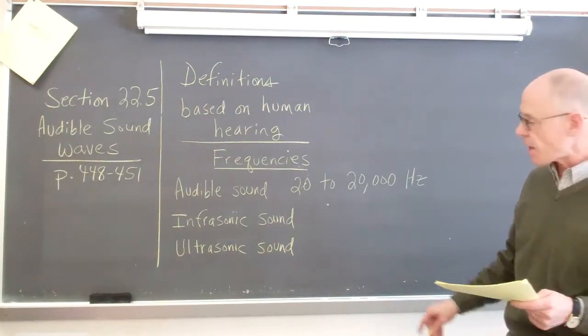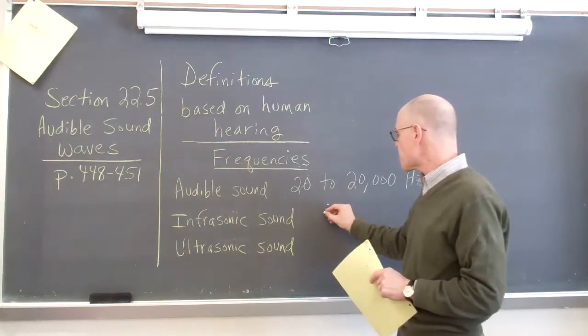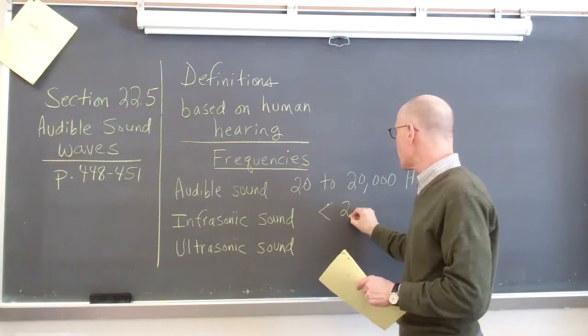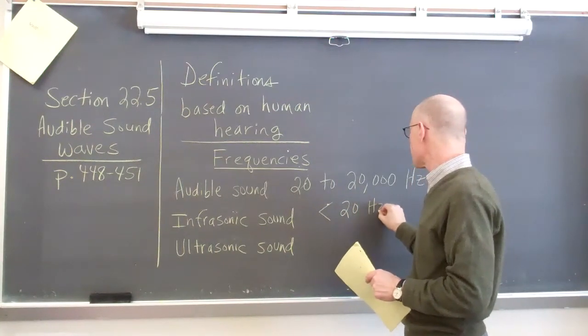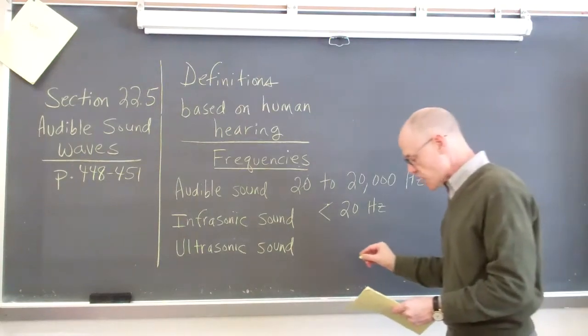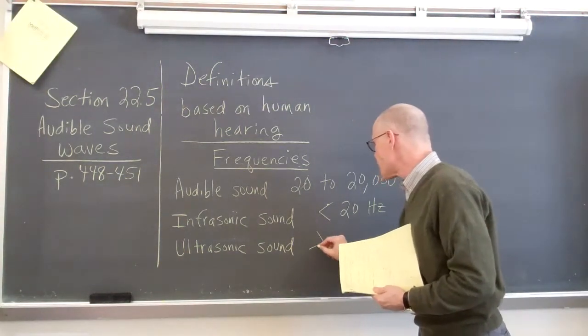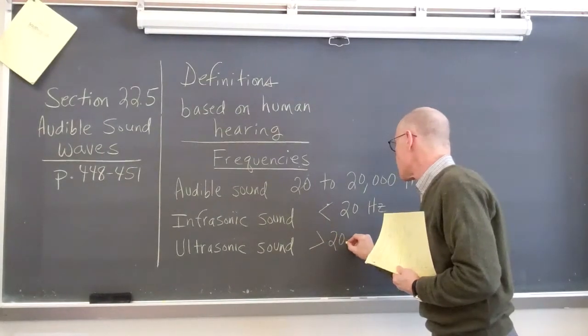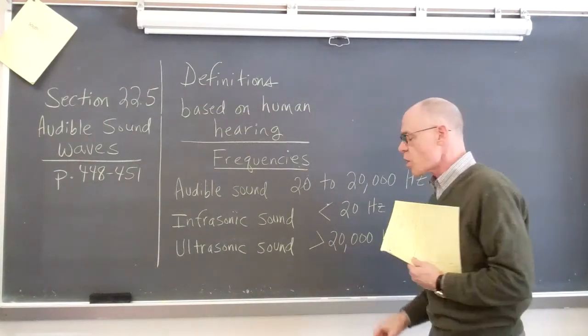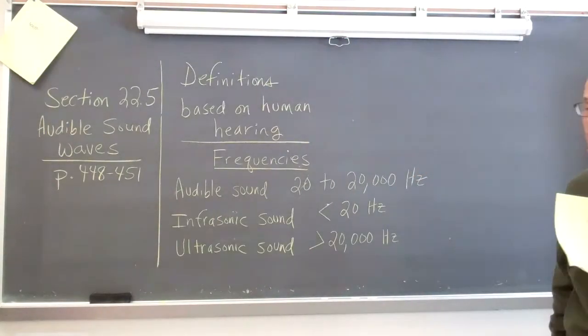There are two other categories. Infrasonic sound is frequency that is less than or below 20 hertz. And then ultrasonic sound is any sounds that are considered greater than 20,000 hertz or beyond the range of human hearing.